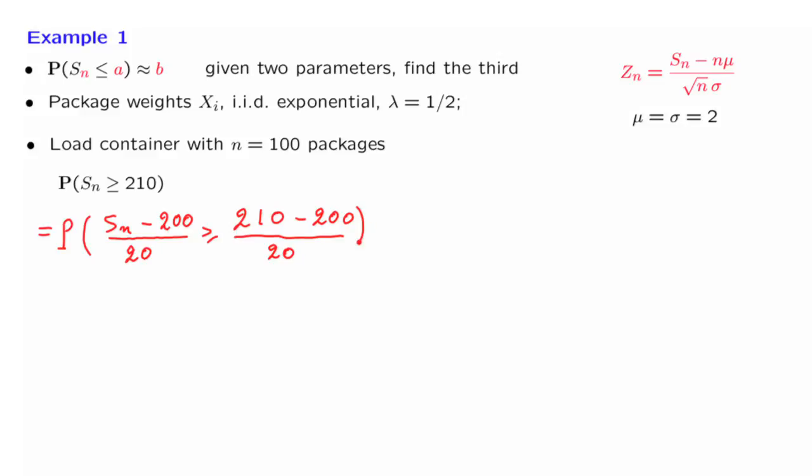This is just an equivalent representation of the original event. But what we have here is the probability that this standardized version of Sn is larger than or equal to this number, which is 0.5. And at this point, we can use the Central Limit Theorem approximation to say that this probability is approximately the same if we use a standard normal instead of Zn.